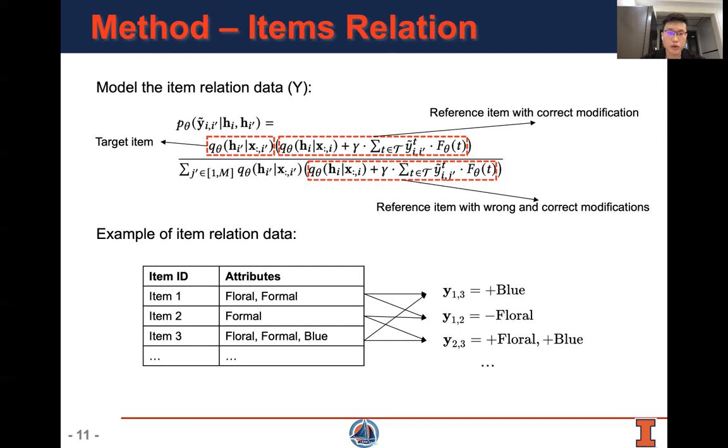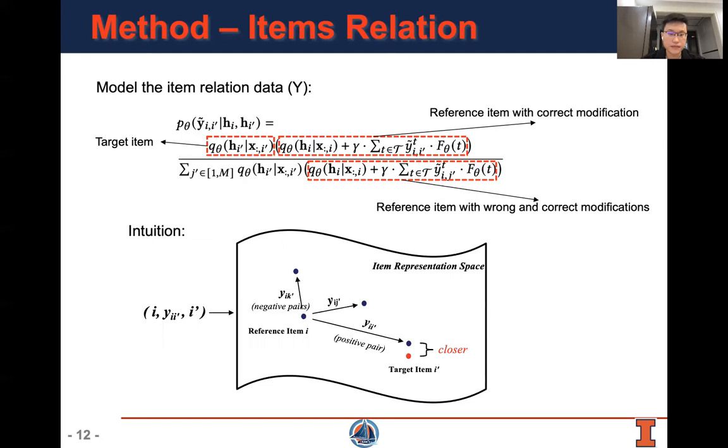This is modeling the item relation data with a contrastive method. Our intuition is the reference item with a correct modification is closer to the target item than the reference item with a wrong modification.